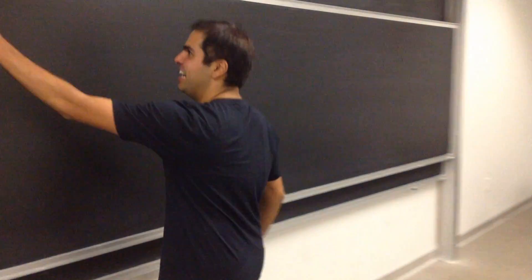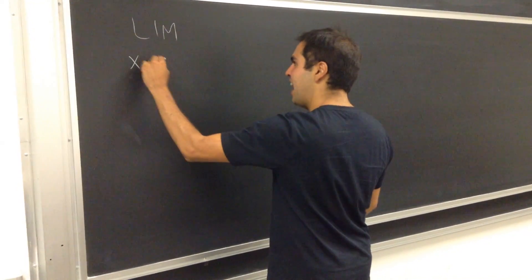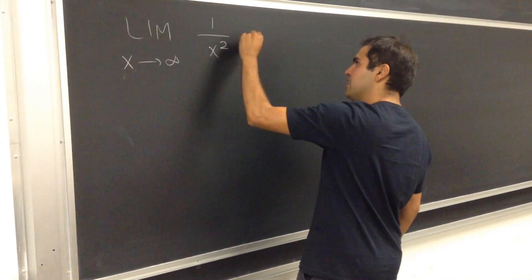For example, let's calculate, let me show rigorously, that limit x goes to infinity of 1 over x squared equals 0.